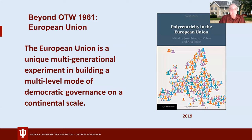Another example is the European Union, which is a unique multi-generational experiment in building a multi-level mode of democratic governance on a continental scale, encompassing a diverse array of national and regional cultures. Researchers applying the concept of polycentric governance to the European Union have focused their attention on the ever-changing interactions among formal public agencies dealing with regional, national, and continental implications of any particular policy sector. Contributors to this volume also specifically examined the extent to which the EU project in building polycentric governance has or has not been able to address long-standing concerns related to equity and social justice. Clearly, the nature of EU governance is very much a work in progress.